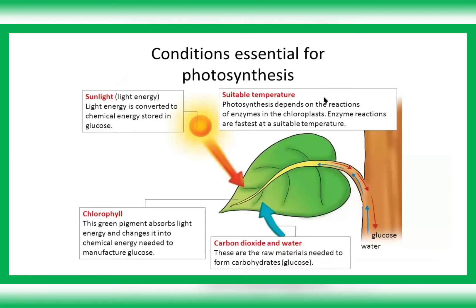Now let's look at the conditions essential for photosynthesis. Firstly, sunlight is essential for the light reaction — light energy is converted to chemical energy by chlorophyll and stored in glucose. Next, we need carbon dioxide and water, which are the raw materials as seen in the equation, and they help form glucose. Then we need chlorophyll — the green pigment that traps and converts light energy to chemical energy to help the plant manufacture glucose.